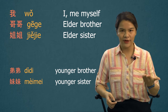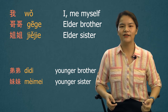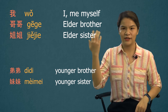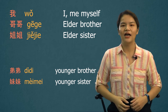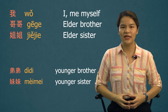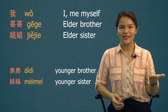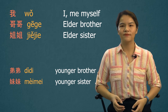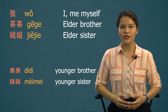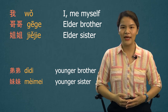Let's review again. Elder brother: 哥哥. Elder sister: 姐姐. Younger brother: 弟弟. Younger sister: 妹妹.